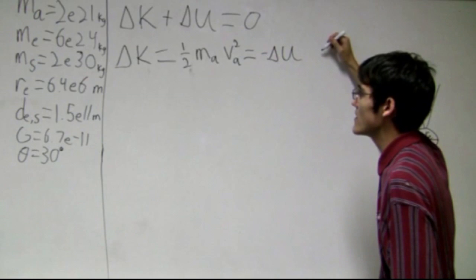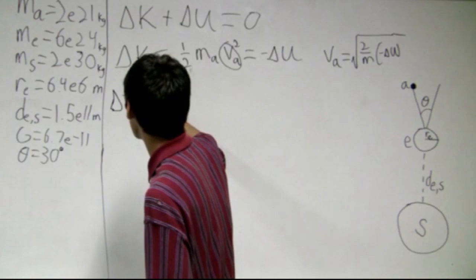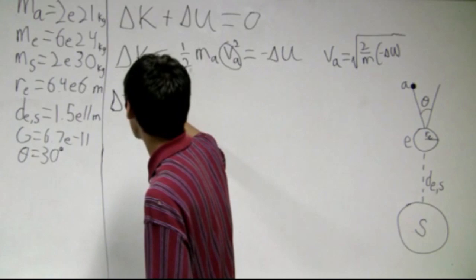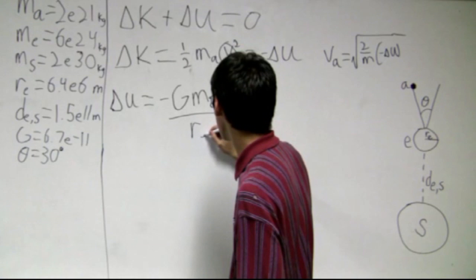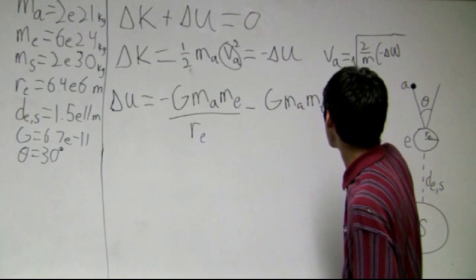Now, we know that we have to solve for this vA. So, square root of 2 over m times negative delta U. So what is delta U? That's just going to be the gravitational potential energy of the Earth and the Sun on the asteroid. So if we take the Earth, that's negative G, mass of the asteroid, mass of the Earth over the radius of the Earth. And for the Sun, that's mass of the asteroid times mass of the Sun, divided by the distance between the Earth and the Sun.